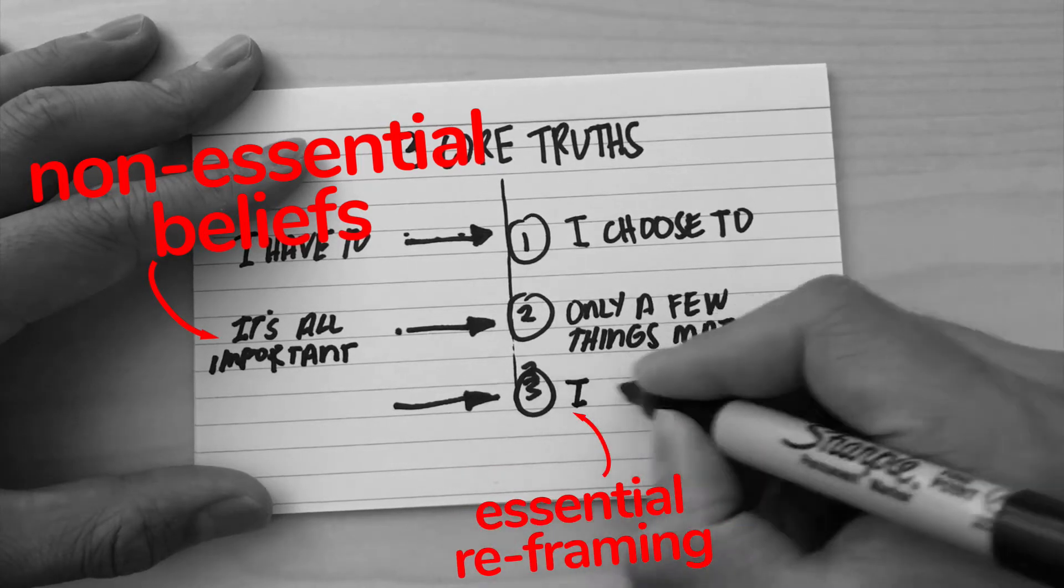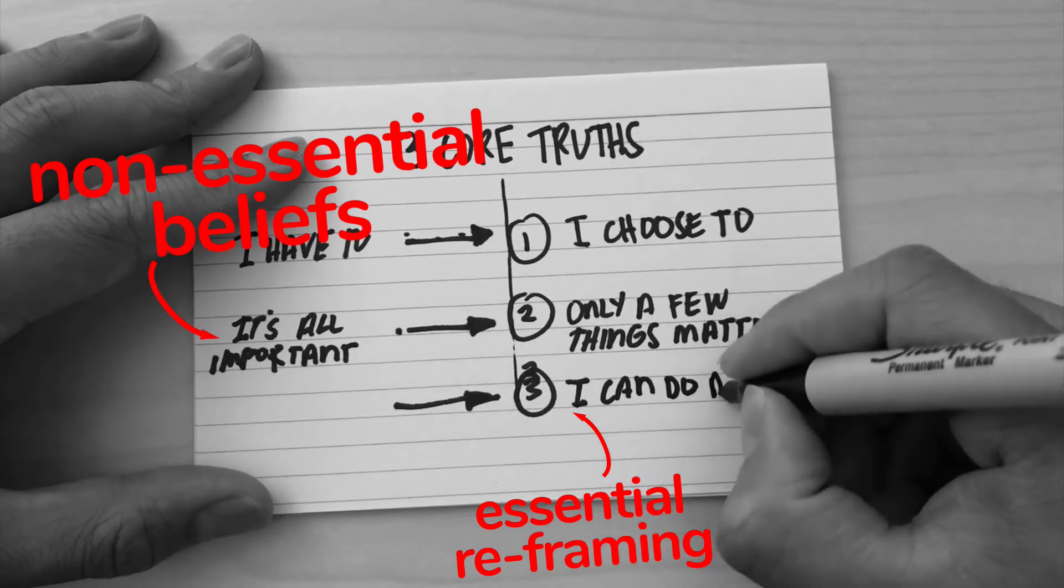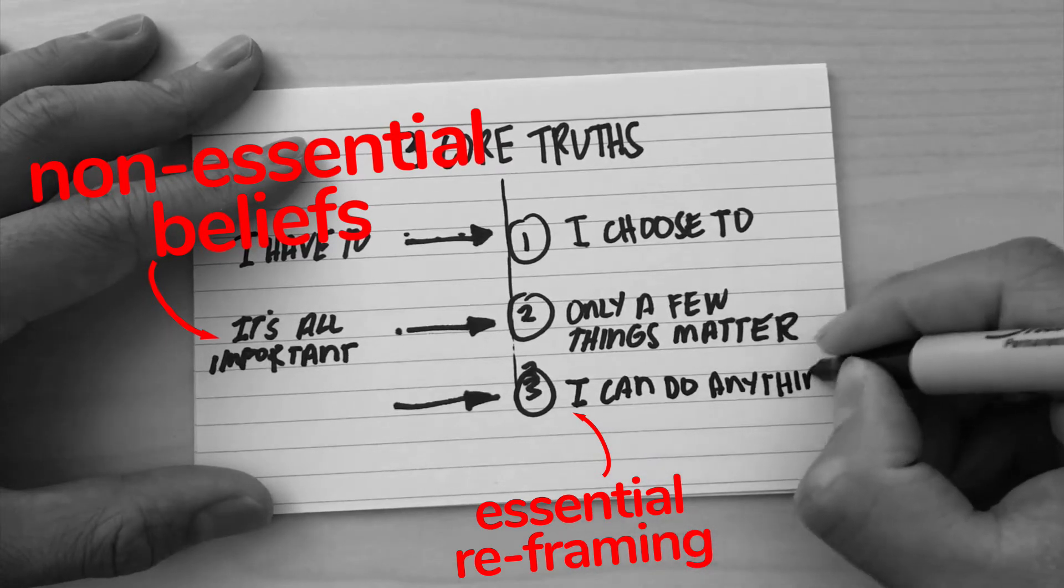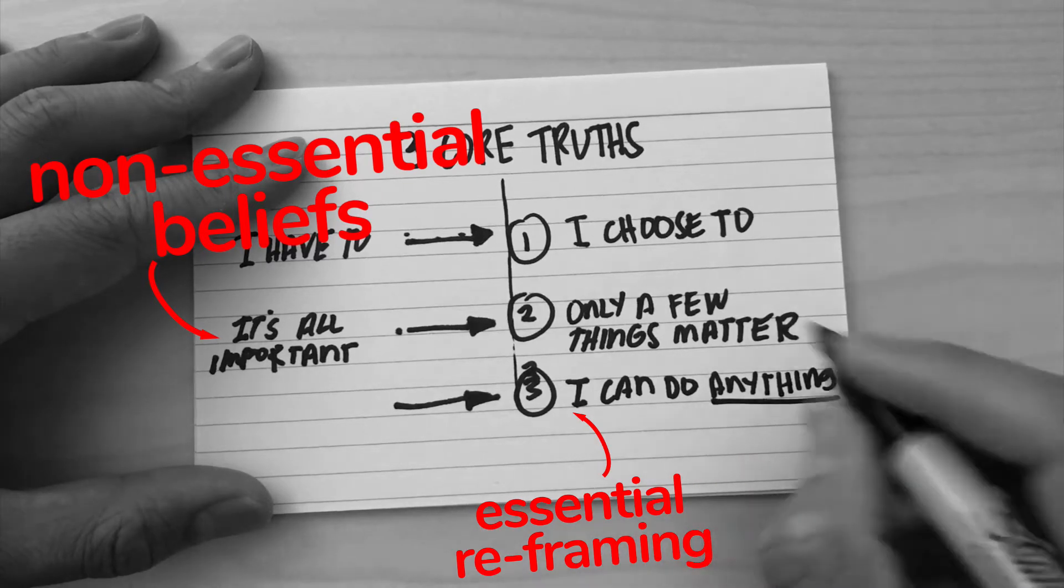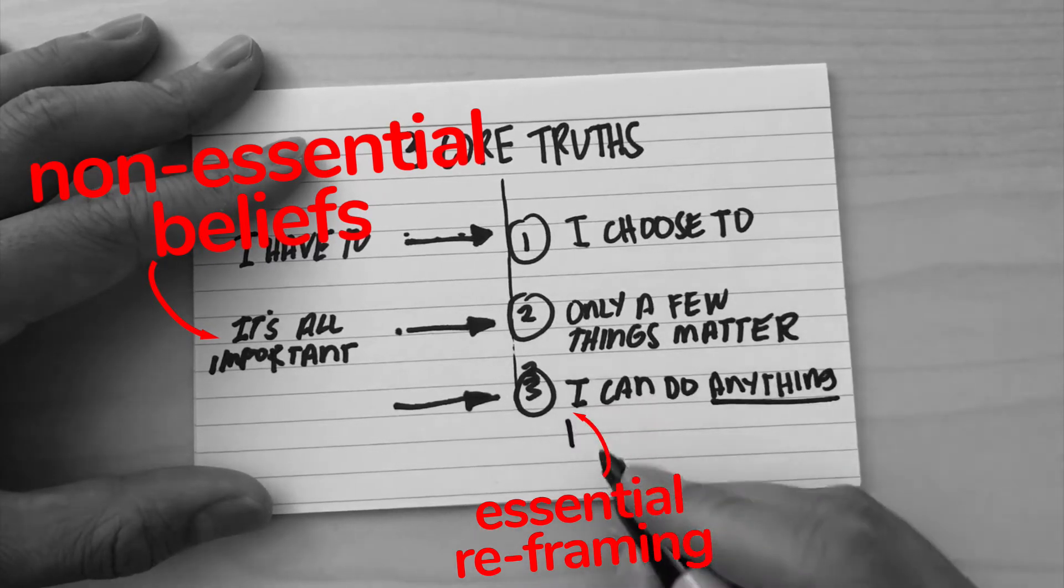Number three: 'I can do anything but not everything.' This comes from the false belief of 'I can do both.' I think it's less and less of a thing that people try to multitask and believe they can do all these different things.